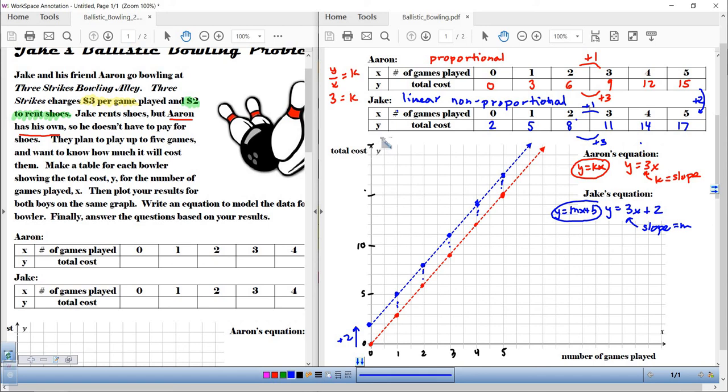Well, I hope this helps you understand. Initially, we're just scratching the surface, as they say, of linear non-proportional relationships. They form straight lines. That's why they're called linear. But they won't go through 0, 0. And y divided by x will not be a constant anymore. All right. Have a great day, everybody. We'll see you next time. Bye.